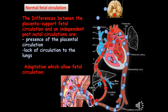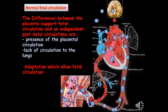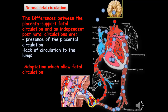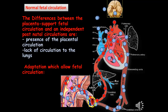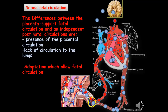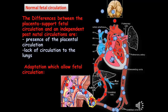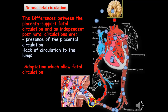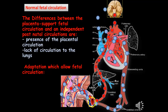The oxygenated blood enters the fetal circulation from the placenta through the umbilical vein, which bypasses the liver through the ductus venosus and combines with the deoxygenated blood from the inferior vena cava. Then the blood joins the deoxygenated blood from the superior vena cava and empties into the right atrium. Since the pressure in the right atrium is more than the left atrium, the blood is shunted through the foramen ovale.